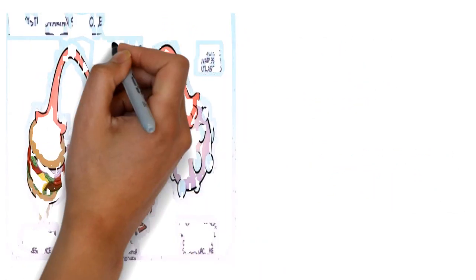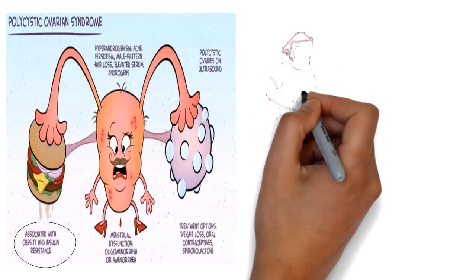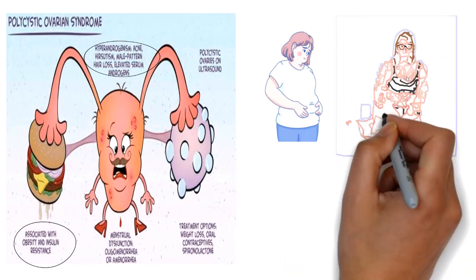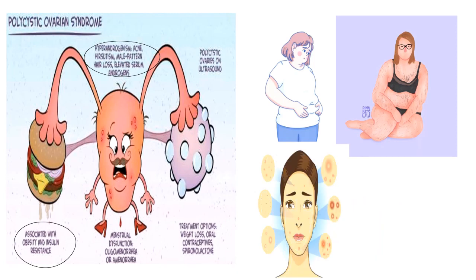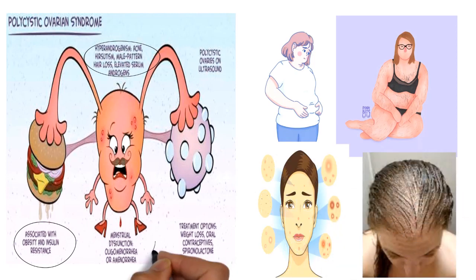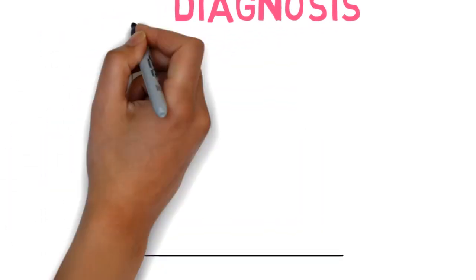The signs and symptoms involved are: due to obesity there is insulin resistance, hyperandrogenism causes acne, hirsutism also known as virilization, dysfunctional menstruation, oligomenorrhea or amenorrhea, body shaming, and anxiety.